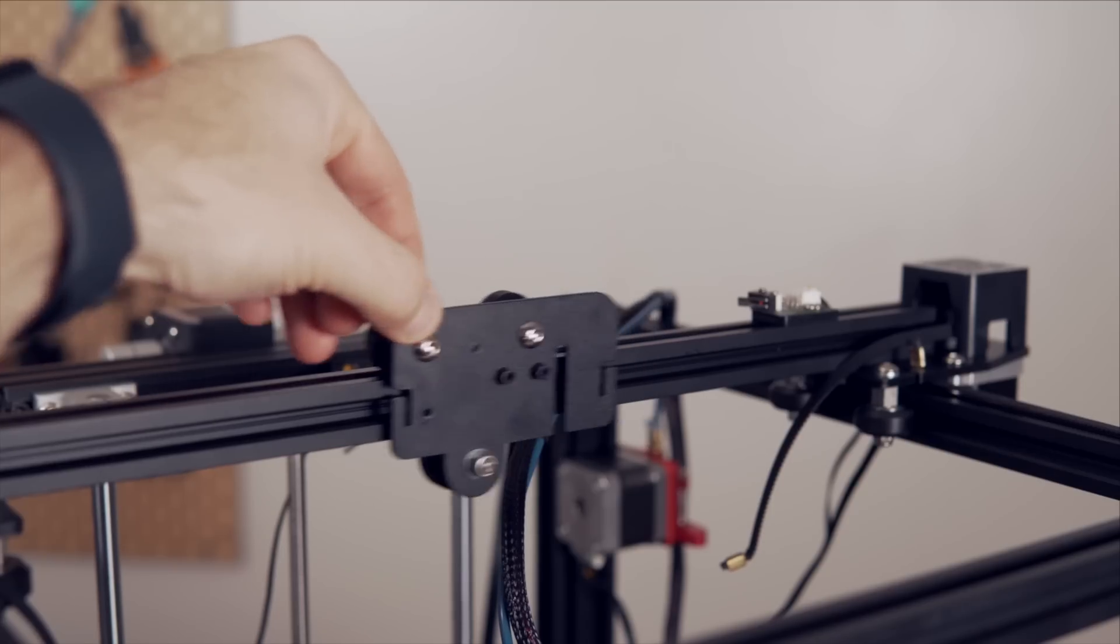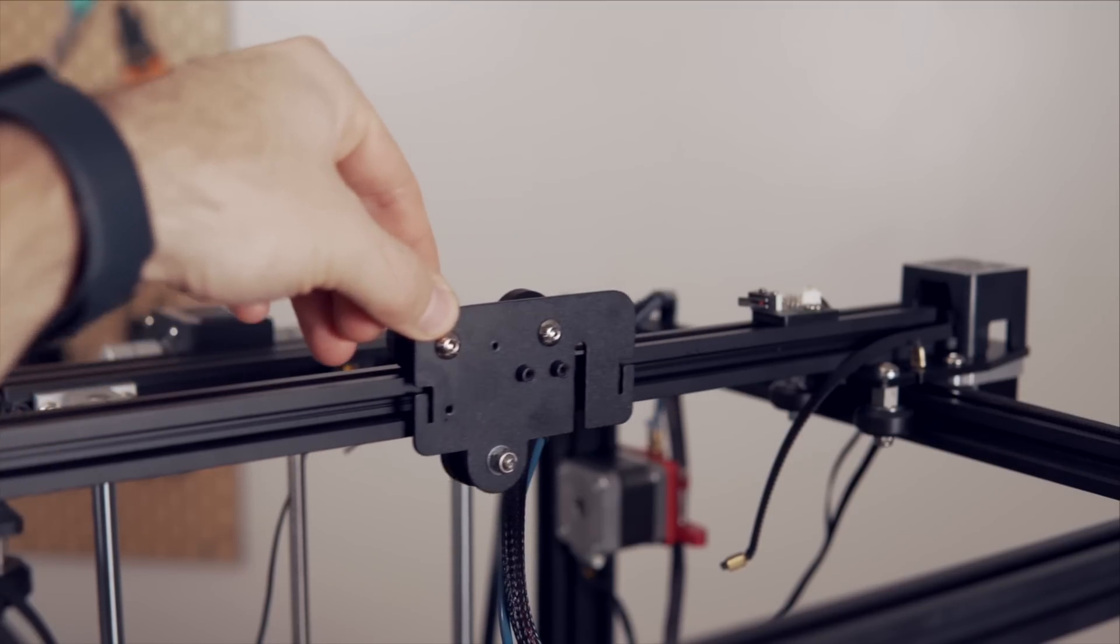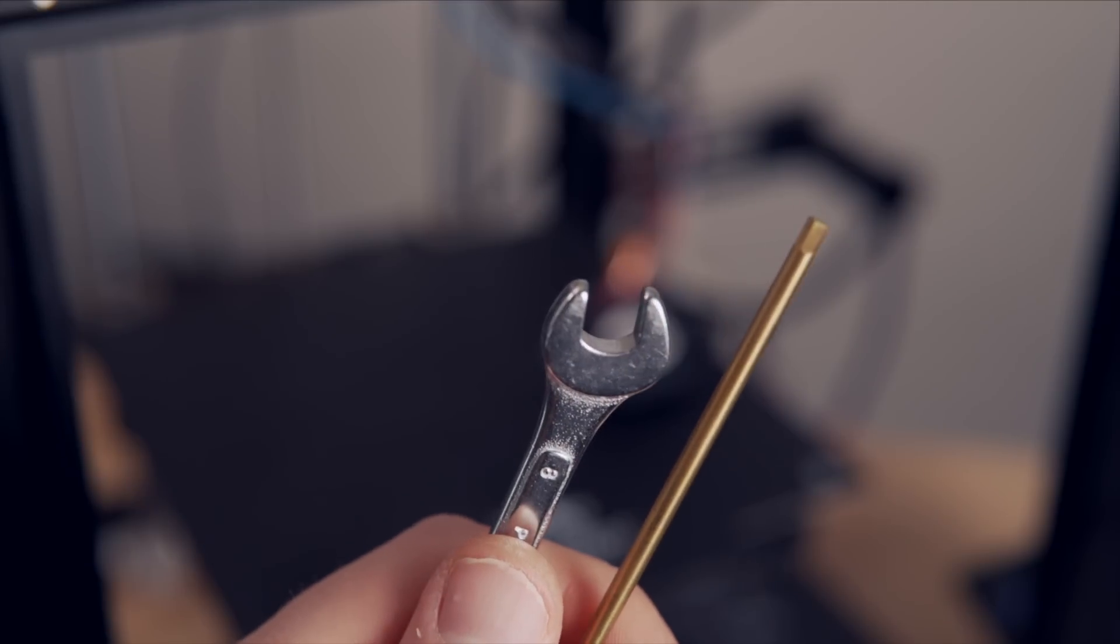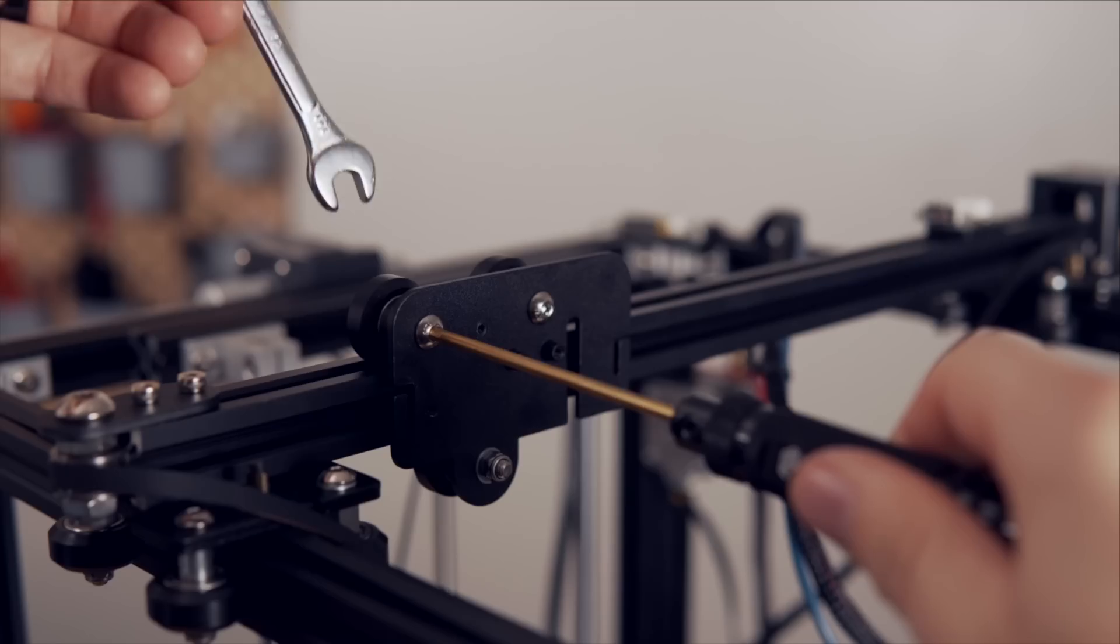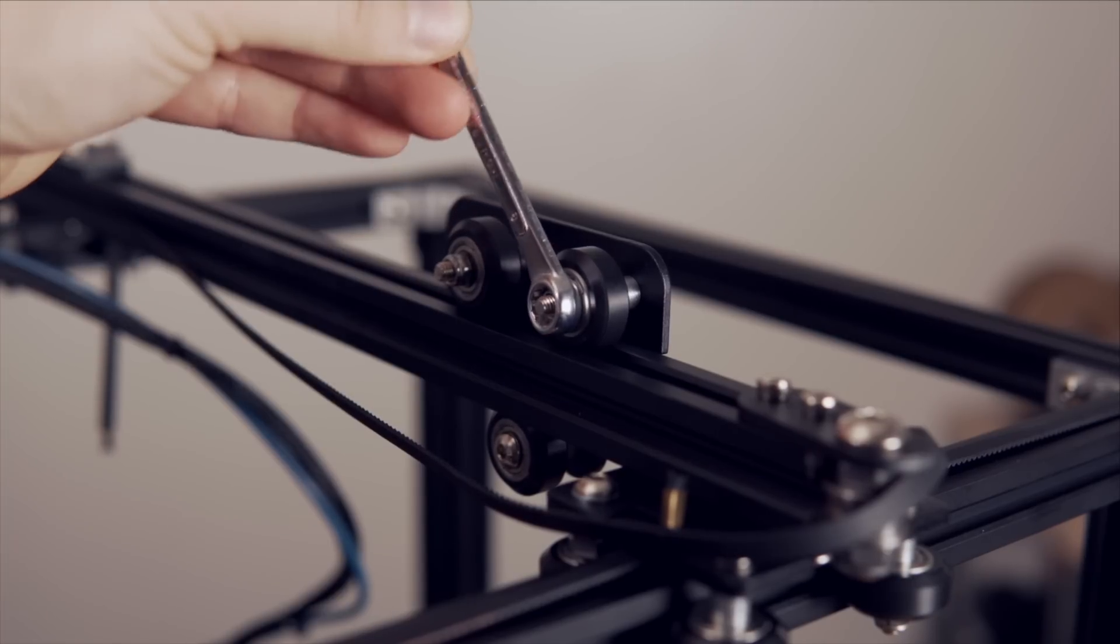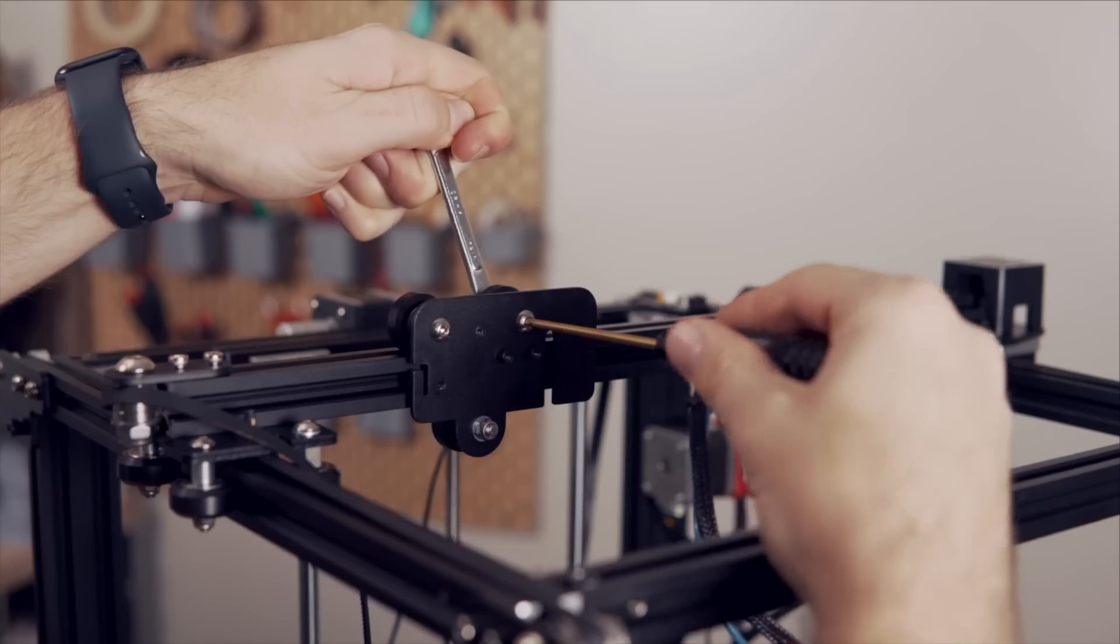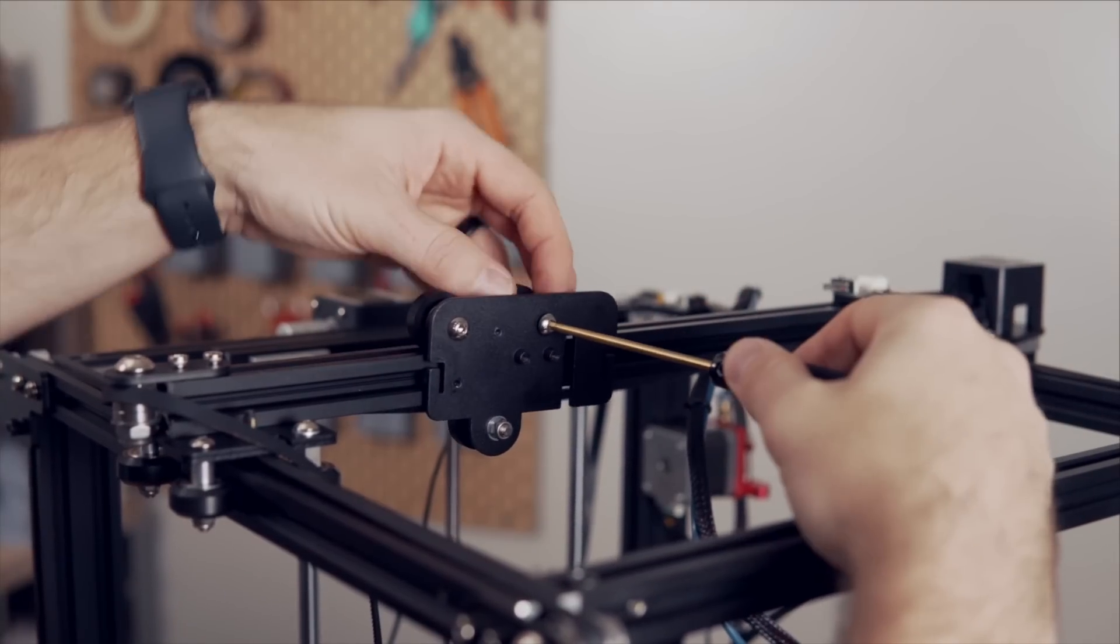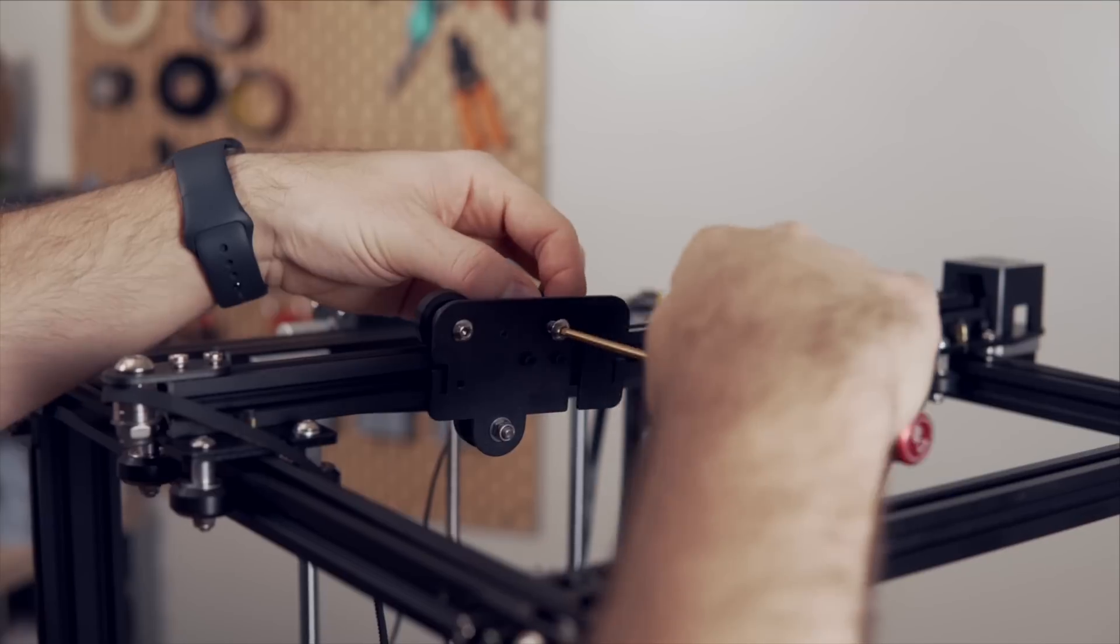Now that the X carriage is free, we are ready to remove the wheels. For this, you will need a three millimeter Allen wrench as well as an eight millimeter spanner wrench for the nylon lock nut. The easiest way to do this is just to take the wrench and place it over the nylon lock nut with one hand, holding it in place, keeping it from spinning. Then with your other hand, use your Allen wrench to remove the screw.